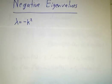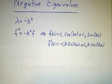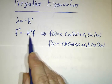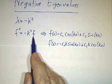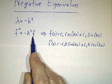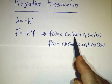Finally, we look for negative eigenvalues. And now we want λ to be minus k². So our second derivative is minus k² times f. And the solution to that is not coshes and sinches, but cosines and sines of kx.